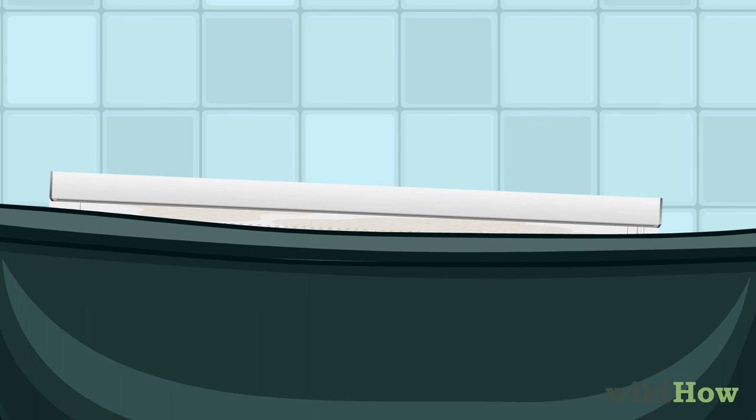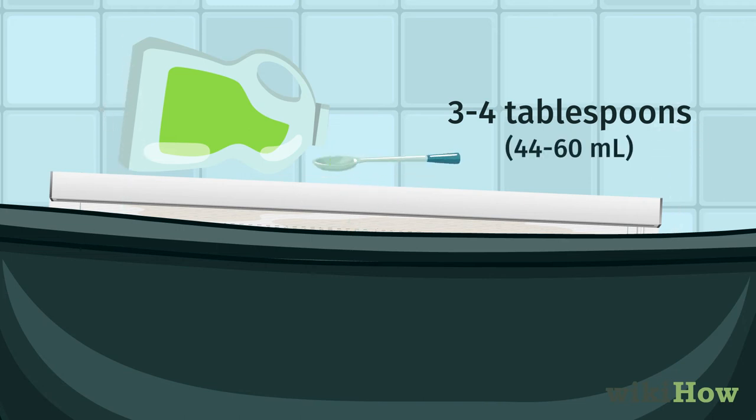You can also brighten white blinds by soaking them in hot water and 3-4 tablespoons (44-60 ml) of bleach.